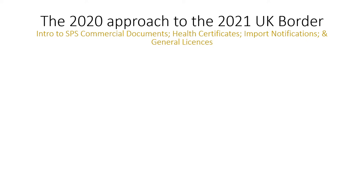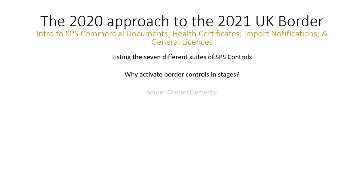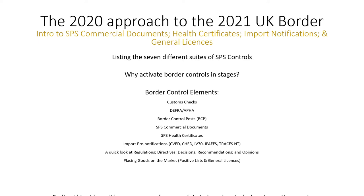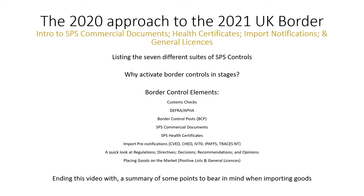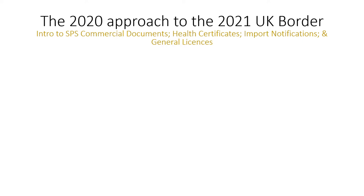Here is the order of things. To start, we'll list the 7 different suites of SPS border controls — just to learn the names. Then we'll quickly discuss the reasoning behind the staging of controls at the UK border. After that, we'll explore border elements that are part of the different suites of SPS border controls, followed by a quick summary at the end. You will get a better, more in-depth experience if you have already watched the Tools Club Conventions and Controls video — so watch that first.